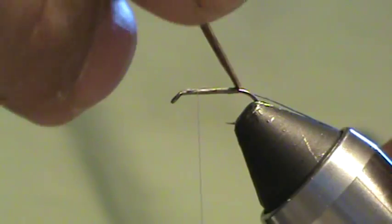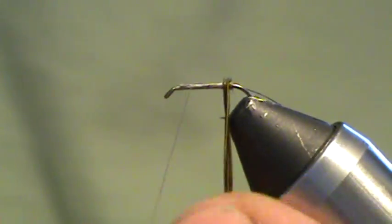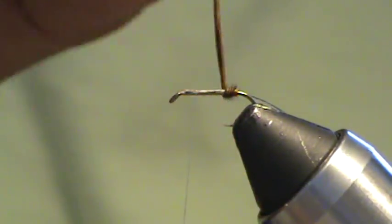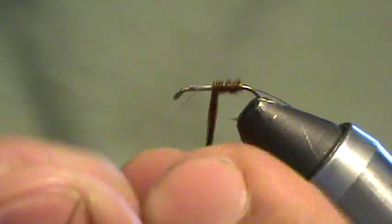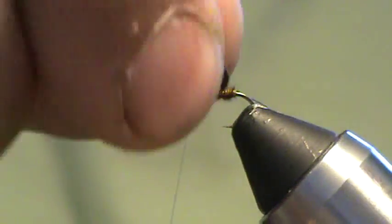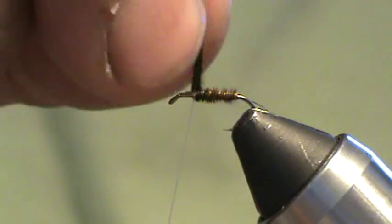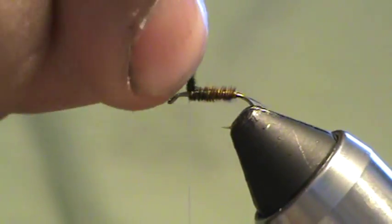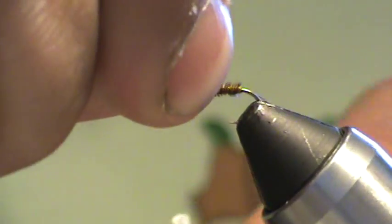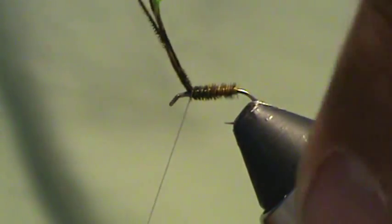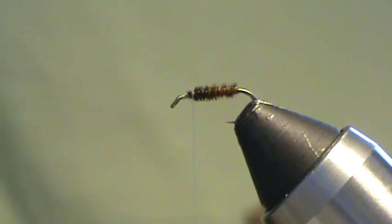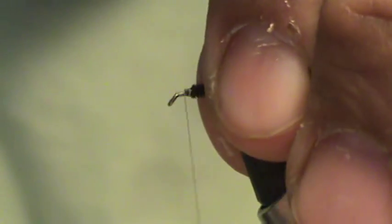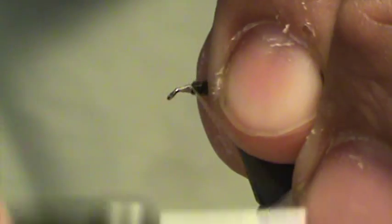And then just wrap your pheasant tail, each wrap touching and maybe slightly overlapping the other. I'm going to make a couple nice turns in here just to make a nice smooth transition.